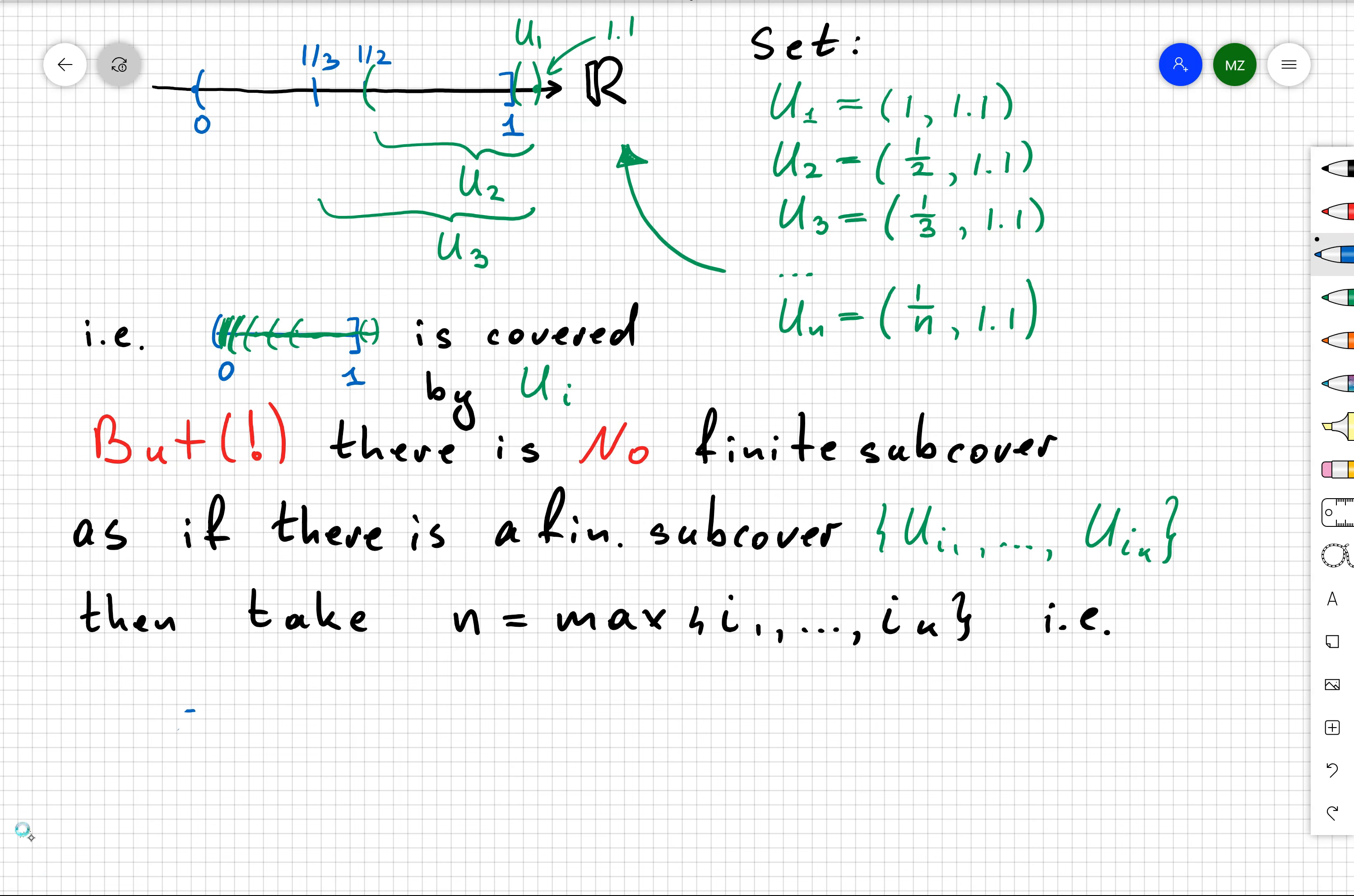That maximum, if you sketch a picture, is going to be some point 1/n between 0 and 1. You can see there's going to be a gap between 0 and 1/n.